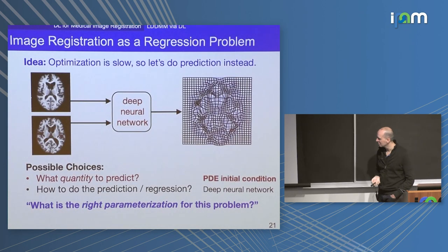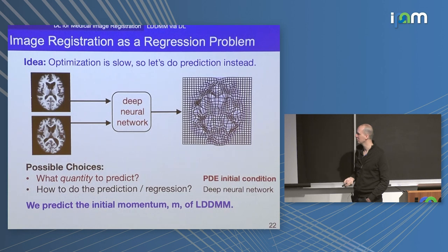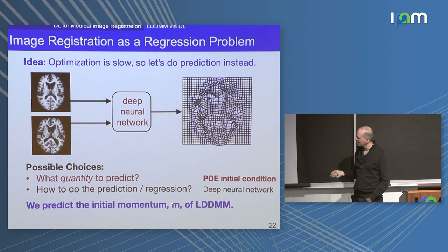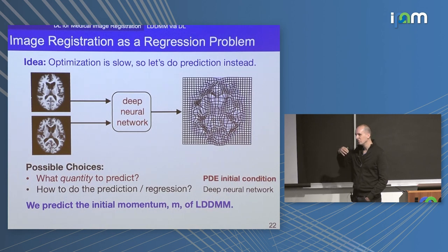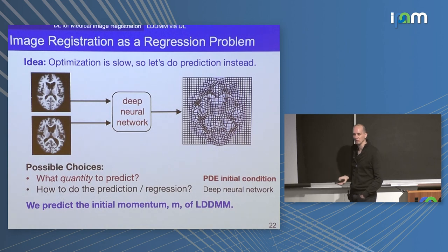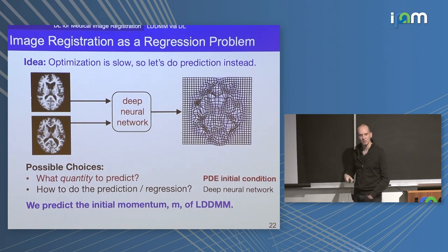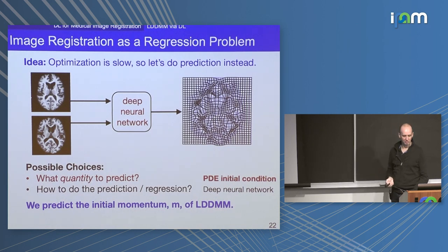So now, what we're going to do is predict the initial momentum of LDDMM — the vector momentum. The nice property is that you predict it, and then the velocity is obtained from this momentum by smoothing applied after the fact. No matter what M the network predicts, the neural network doesn't need to learn about the smoothing. The smoothing comes after the fact, and then you integrate the equations out, so you retain the property of getting diffeomorphic transformations at test time — not only during training — because you're going for the prediction of the momentum, not a displacement field.